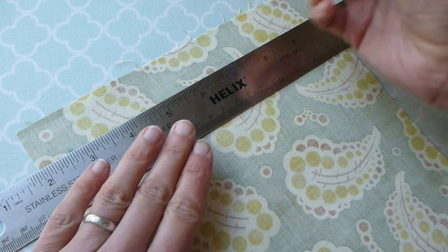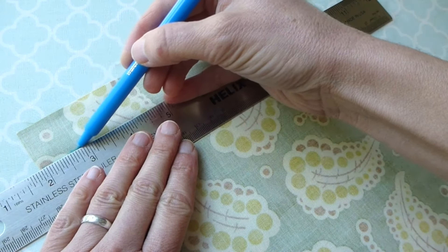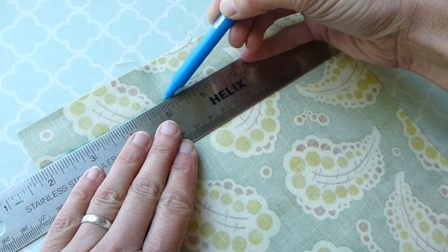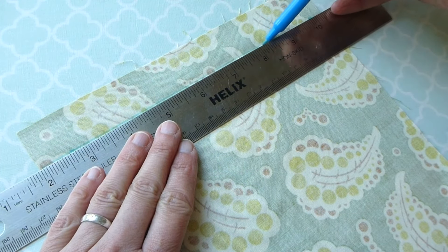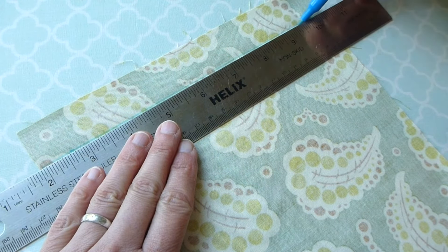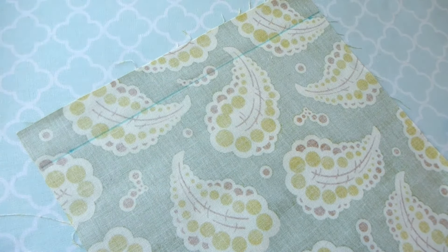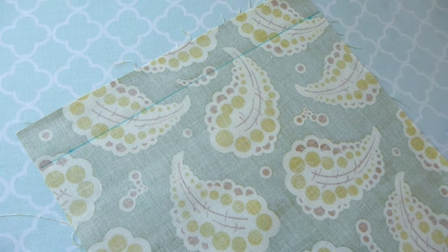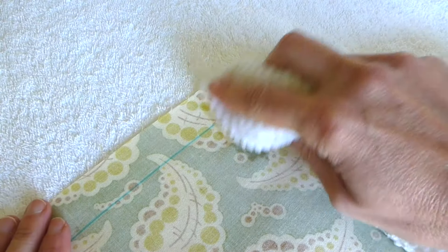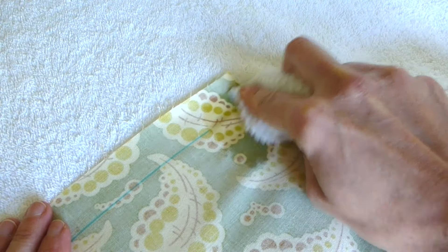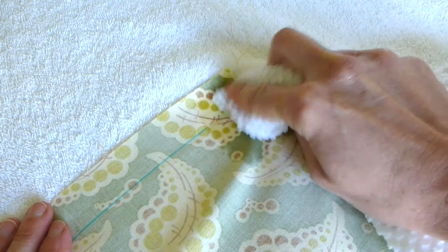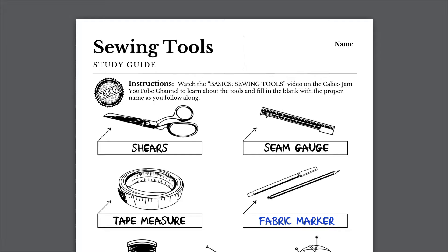A fabric marking pen or pencil is used to transfer important pattern information to your fabric, such as fold lines for hems and elastic casings, darts, buttonholes, and button placement. Many are designed to wash out of the fabric, like this special fabric marker. Label the fabric marker on your study guide.